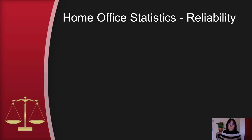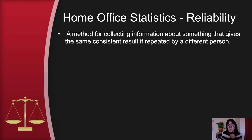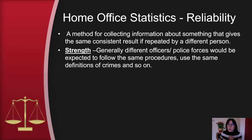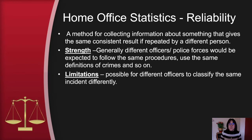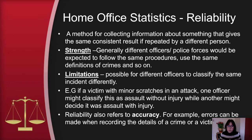Reliability means a method for collecting information that gives the same consistent result if repeated by different persons. The strength of the Home Office statistics is that generally different officers and police forces — all 43 across the country — would be expected to follow the same procedures, the same guidelines, and use the same definitions of crimes. The limitation, however, is that it's possible for different officers to classify the same incident differently. For example, if a victim had minor scratches from an attack, one officer might classify it as assault without injury whereas another might say assault with injury.